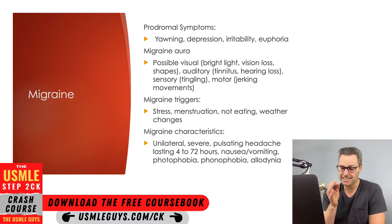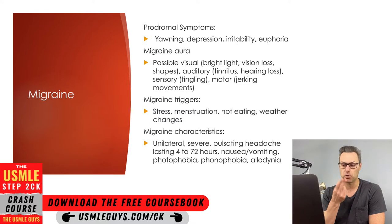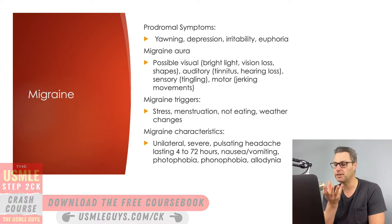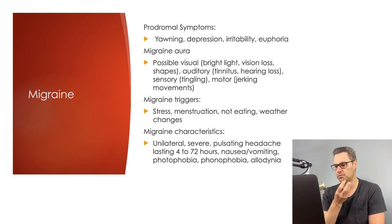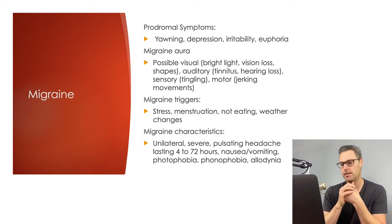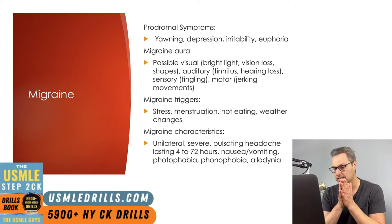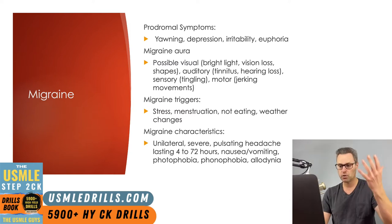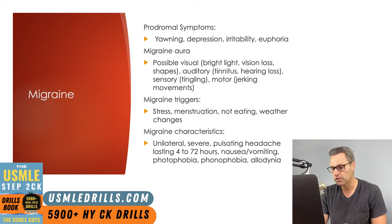A migraine aura is a set of symptoms that may precede or be present during the migraine episode. These can include both sensory and motor disturbances — a loss of senses such as hearing, sight, or sound, a feeling of numbness or tingling. It can also include visual disturbances like seeing bright lights or shapes, or hearing ringing noises. About a quarter of individuals with migraines will have a migraine aura, and it can be difficult to distinguish from a TIA or stroke. Visual and sensory auras involving numbness and tingling are the most common.